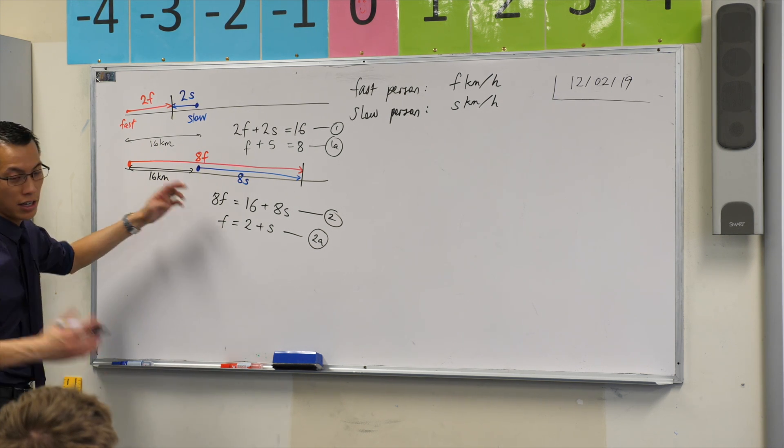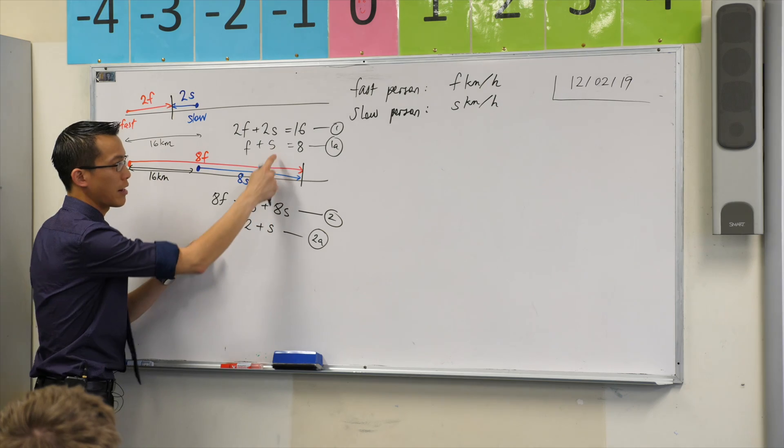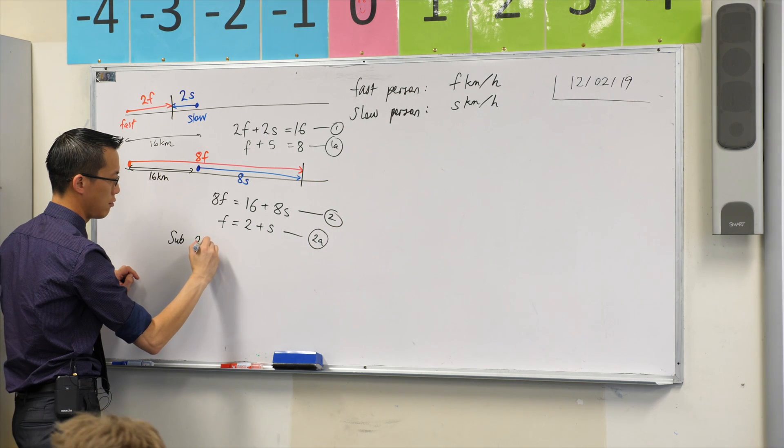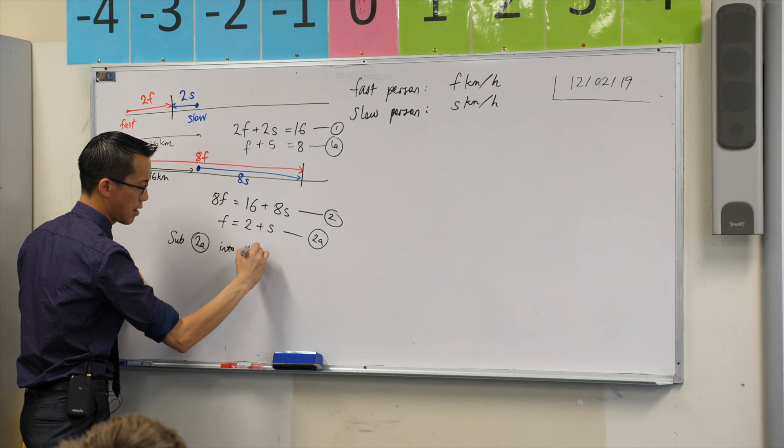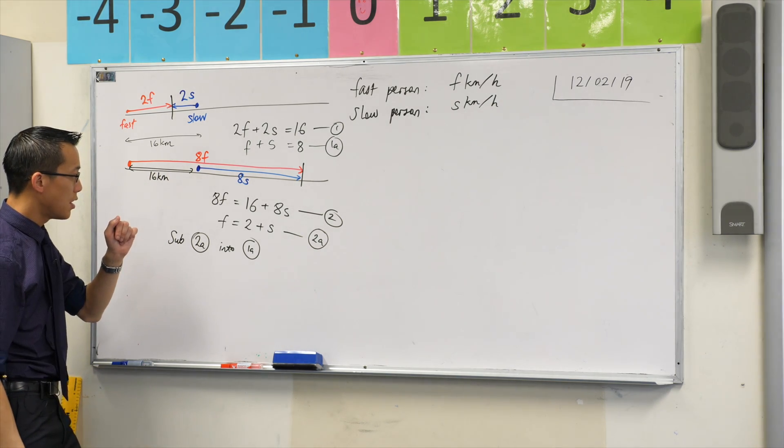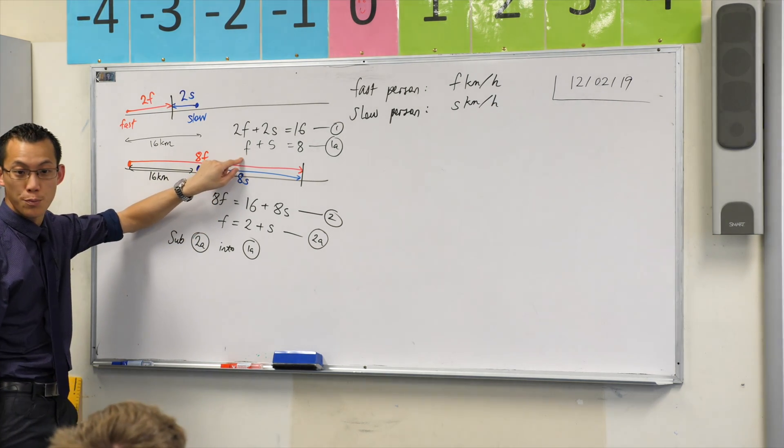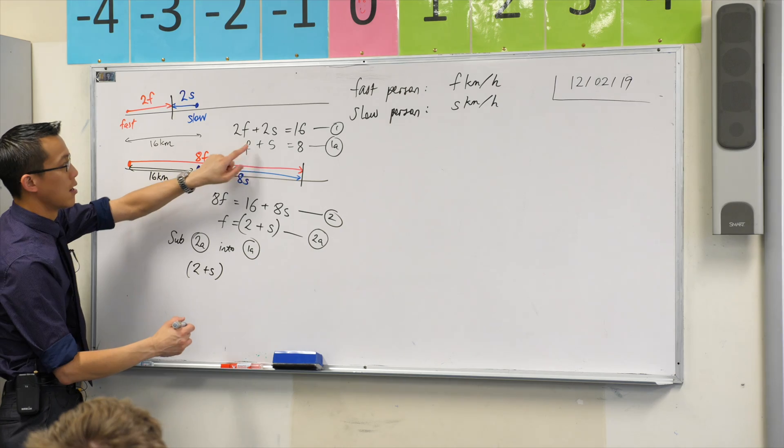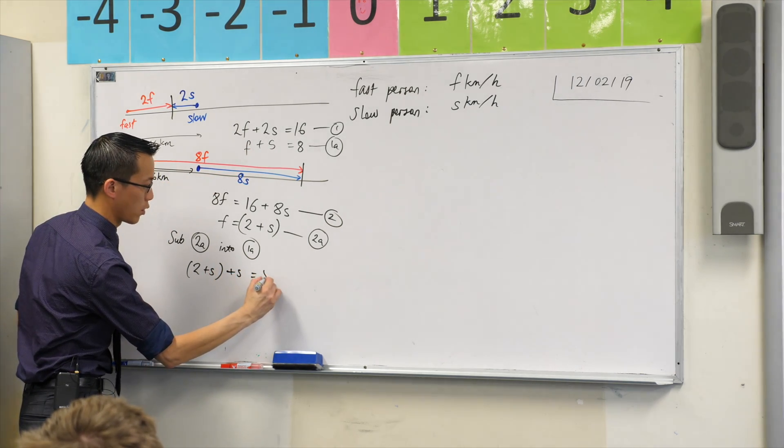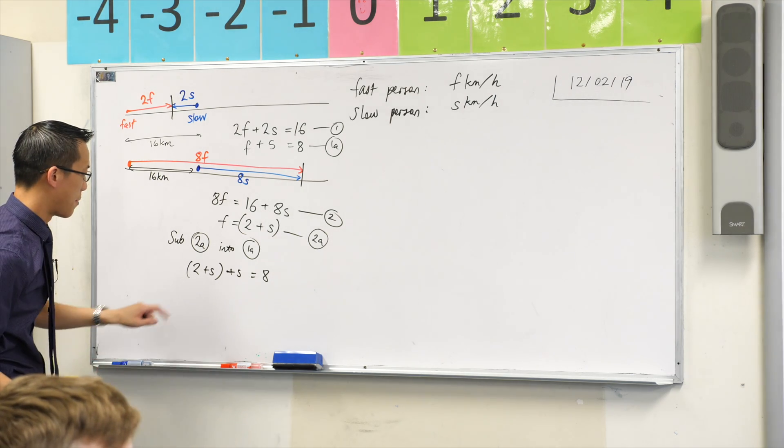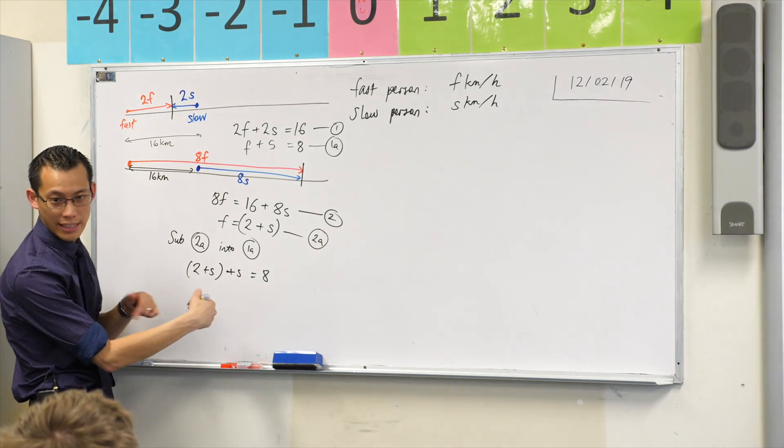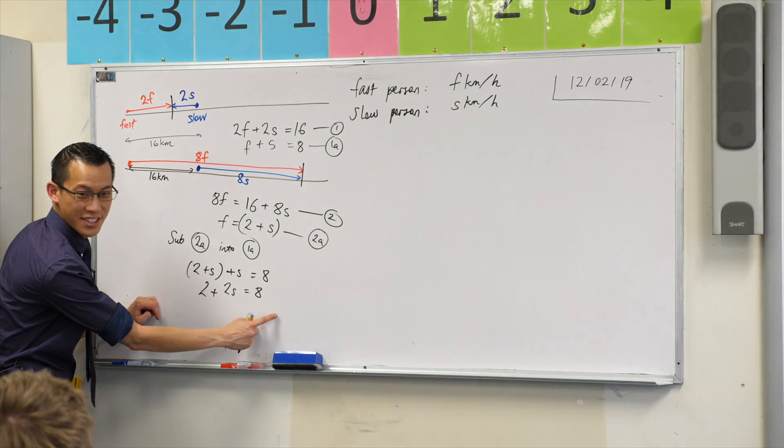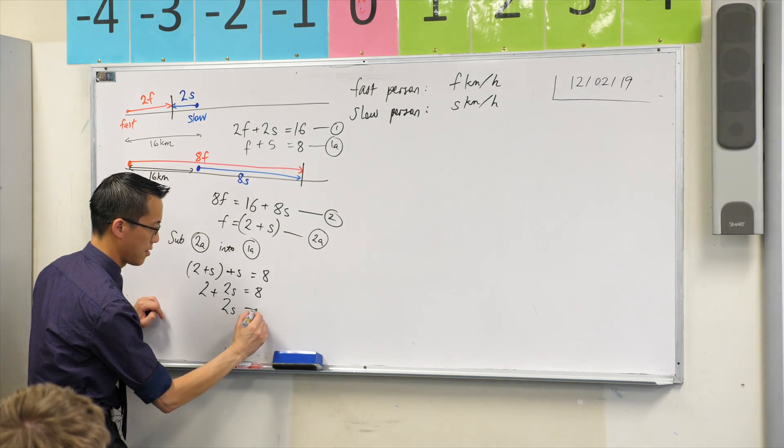And so you can see here, there's a lot of things you can do, but it looks like I can substitute this straight into here. So I'm going to substitute 2a into 1a. So instead of writing f, up here I'm going to write 2 + s. So I'm going to have (2 + s) + s = 8. We can collect like terms. We can say 2 plus how many s's? 2s. 2 + 2s = 8. Subtract two from both sides. 2s = 6.